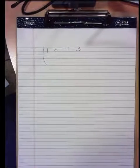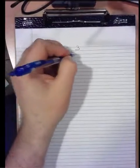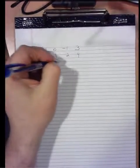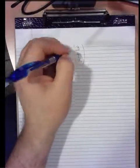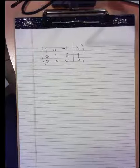So top row of one, zero, negative one, three. Second row of zero, one, two, four. And a third row of zero, zero, zero, zero. So there we have the augmented coefficient matrix that's been reduced to row echelon form.